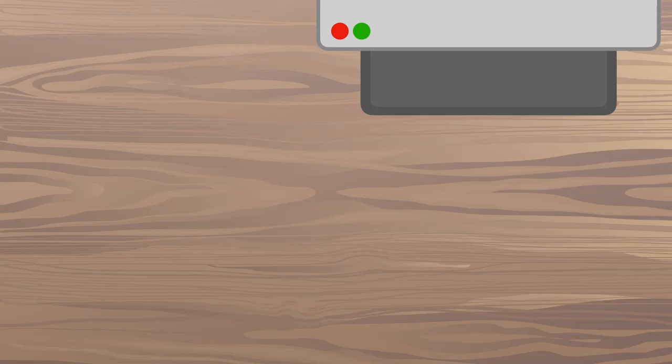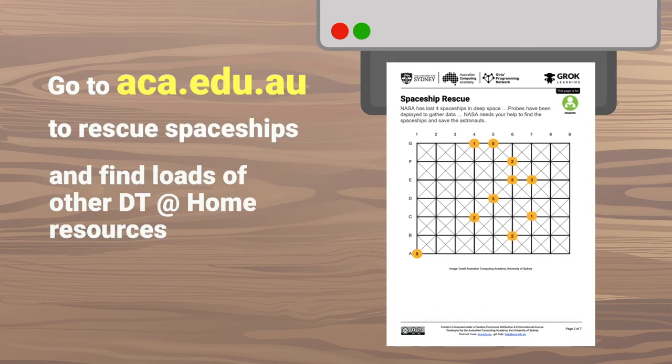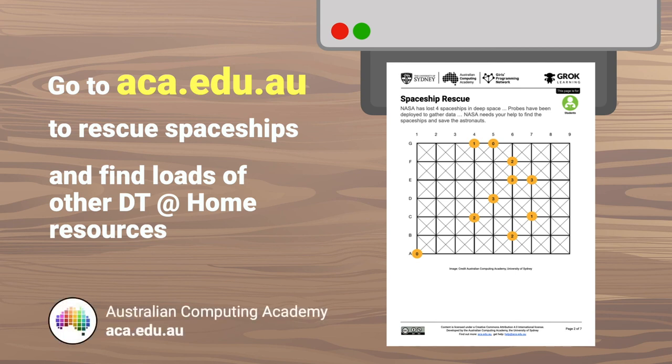So, give it a shot. See what you can do. Find those missing spaceships. You never know. NASA might name something after you. Like a comet. Or a Mars robot. That'd be cool.